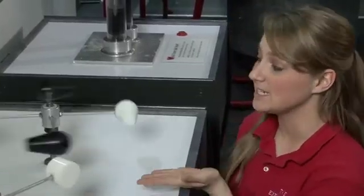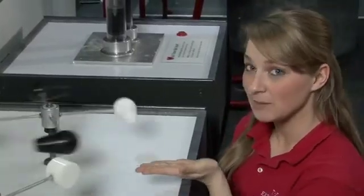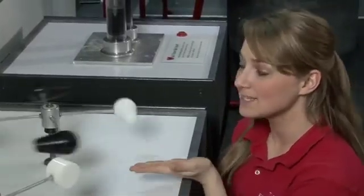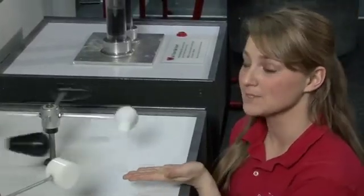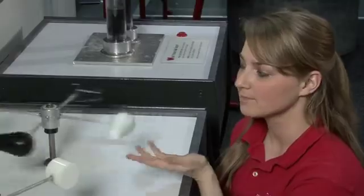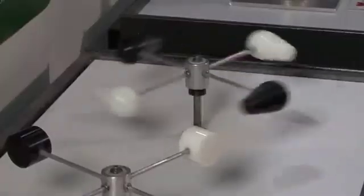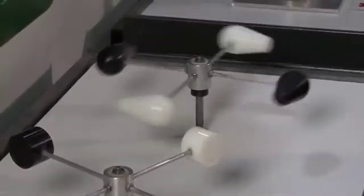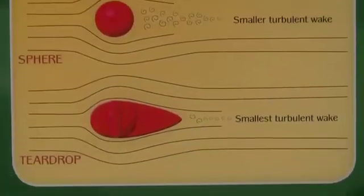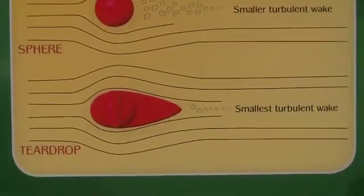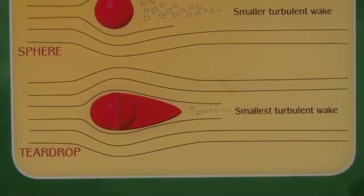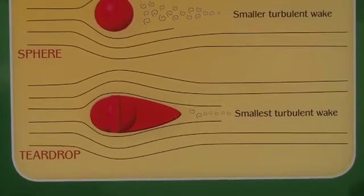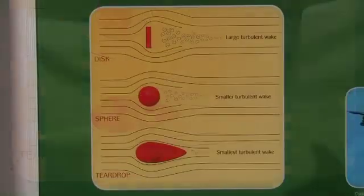As you can see, the teardrop shape is the last of the three shapes to stop moving. That's because as the air is moving across the teardrop shape, it's going to stay attached even longer than it did for the sphere.